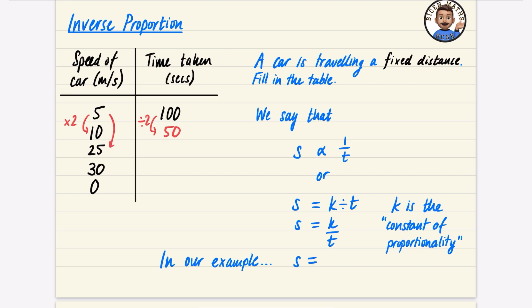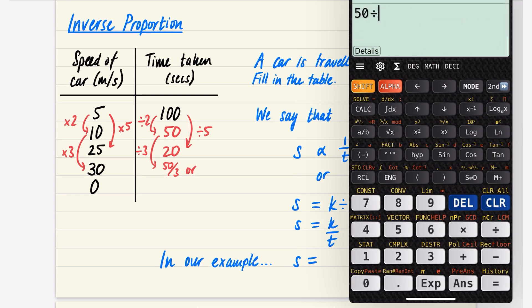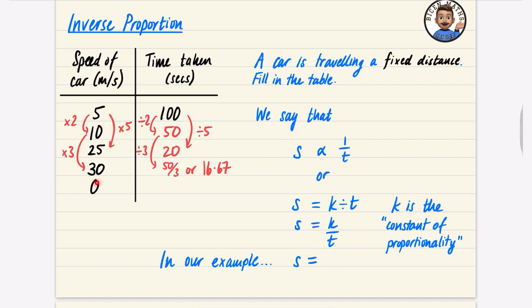Similarly, if the car was traveling five times faster it should take five times less time, and 100 divided by 5 is 20. You can spot patterns: going from 10 to 30 means the car is traveling three times faster, so the time divides by 3. 50 divided by 3 is 16.67 seconds. And if the car was not traveling at all, it would take an infinite amount of time — it would be undefined because it's not moving at all.